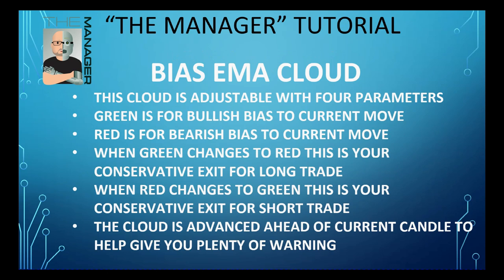Price action is important, and combining it with volume is a key skill taught in a separate video. The bias EMA cloud is adjustable with four different parameters. Green on the bias EMA cloud indicates bullish bias; red indicates bearish bias. When green changes to red, that's your conservative exit for a long trade. When red changes to green, that's your conservative exit for a short trade. The cloud is projected ahead of the current candle to give you plenty of warning.